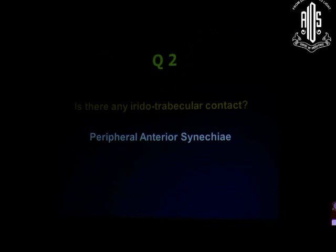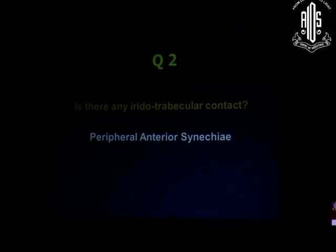Coming to the next question: is there any evidence of irido-trabecular contact? This is perhaps the most important thing to learn in gonioscopy — to distinguish between an open and closed angle. You will see open angle in half the circumference, and here the iris is apposed to the trabecular meshwork. Here trabecular meshwork is visible; from here it will become invisible because the iris has come in contact. This is the starting of peripheral anterior synechia formation with angle closure — half open, half getting closed.